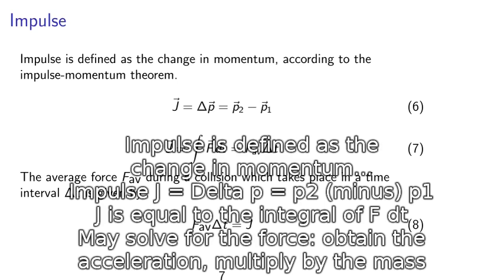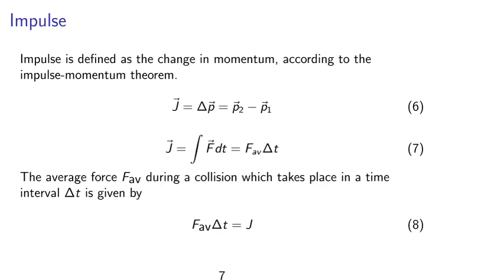Impulse. Impulse is defined as the change in momentum according to the Impulse Momentum Theorem. We have j equals to delta p equals p2 minus p1, where j is the impulse. It is a vector quantity. j is also equal to the integral of f dt, which is equal to f average times delta t. The average force f average during a collision which takes place in the time interval delta t is given by equation 8, as f average delta t equals j.